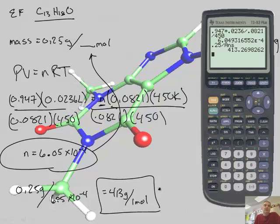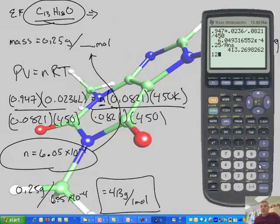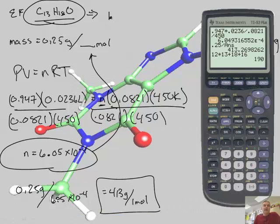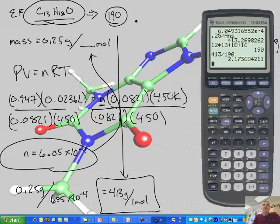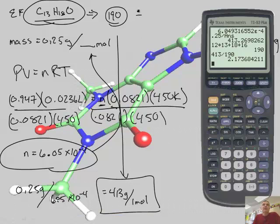That's not the answer. This is the molecular weight; we need to compare it to the empirical formula. What's the weight of this? Carbon weighs 12, there's 13 of them, plus 18 hydrogens, plus 16 for oxygen. This adds up to 190. So the empirical weight is 190, the molecular weight is 413. If I take 413 divided by 190, I get about 2.